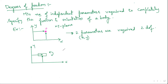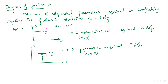Three parameters are required to completely specify the position and orientation: x, y, and theta (the angle). That's why it has three degrees of freedom. This body can move along x, move along y, and rotate about z — since z is the axis perpendicular to the plane. So rotation about z (theta z) is possible, giving three parameters and three degrees of freedom.